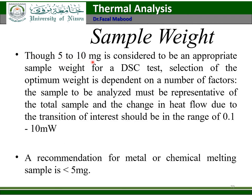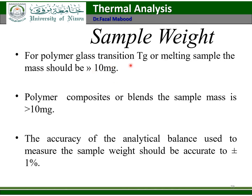Regarding sample weight: 5 to 10 mg is considered an appropriate sample weight for a DSC test, but selection of optimum weight depends on several factors. The change in heat flow due to the transition of interest should be in the range of 0.1 to 10 mW. For metals or chemical melting, the sample should be less than 5 mg. For polymer glass transition or melting, the sample mass should be around 10 mg. The accuracy of the analytical balance used to measure sample weight should be accurate to ±1%.